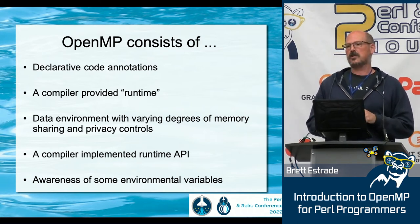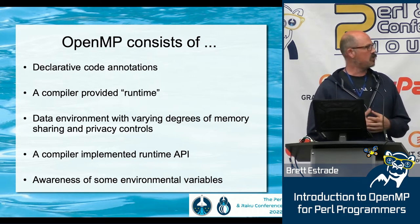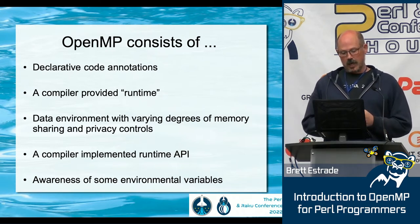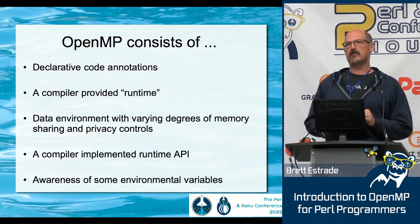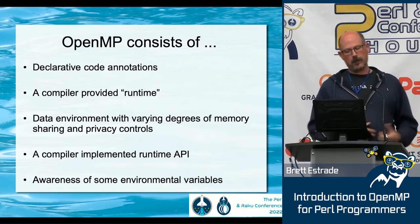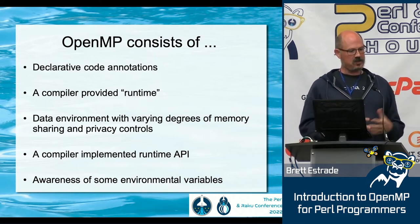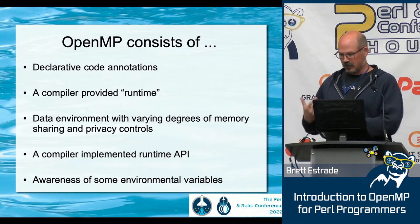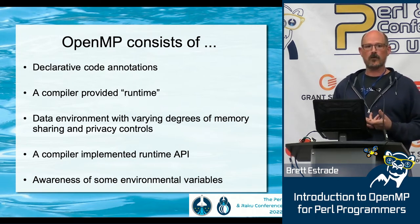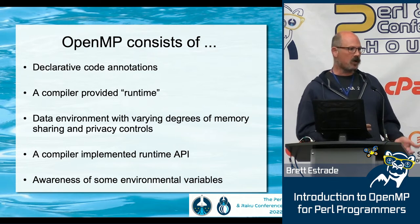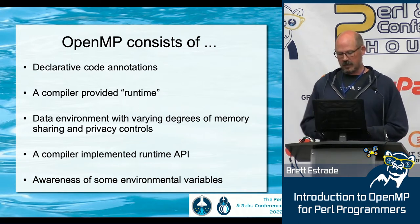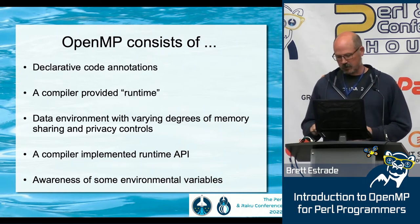OpenMP provides a data environment — you can control what variables and memory addresses are shared among threads and what are private, and how these are initialized within each thread. It provides a compiler-implemented runtime, meaning when you compile and run an OpenMP program, the compiler inserts threading infrastructure and also provides runtime functions where you can control the number of threads, query how many threads are currently in a parallel section, and so on. It's also aware of environmental variables.